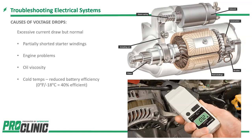You can have excessive current draws, but they could also be normal. Watch out for partially shorted starter windings or engine problems that cause issues when trying to start. Consider oil viscosity — as temperatures get cold, oil gets thicker and heavier, so the engine is harder to spin. When temperatures drop, you're only going to be about 40% efficient at zero degrees, which is where CCA values really come into play. Use a clamp-on inductive amp meter to figure out alternator output or how much current it takes to spin the engine over.